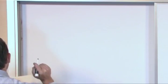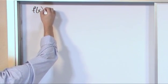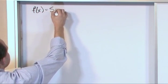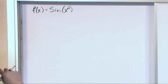So, as an example, let's say we had a function f of x is the sine of x squared, where x squared is what's being operated on with the sine.